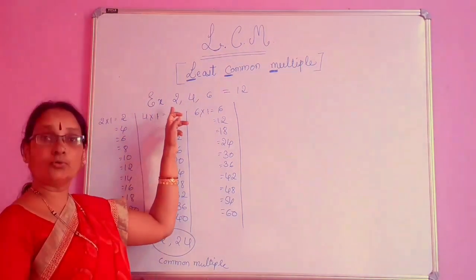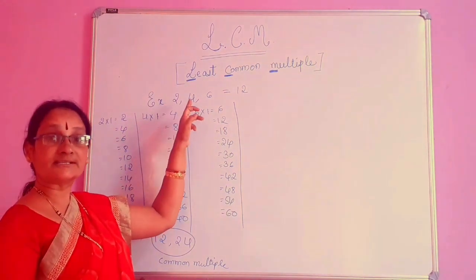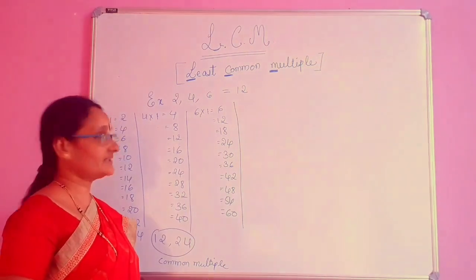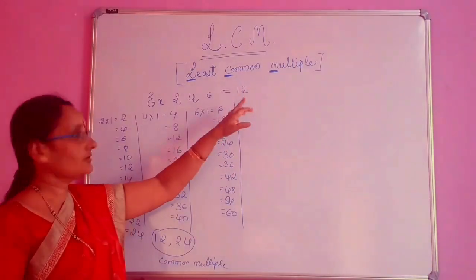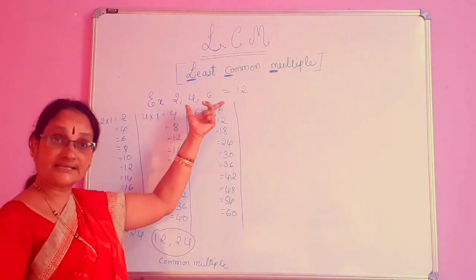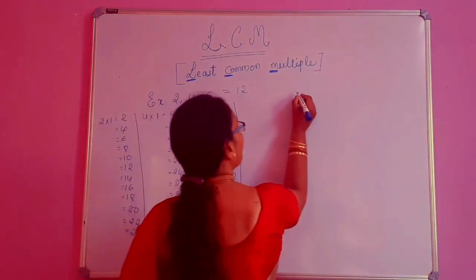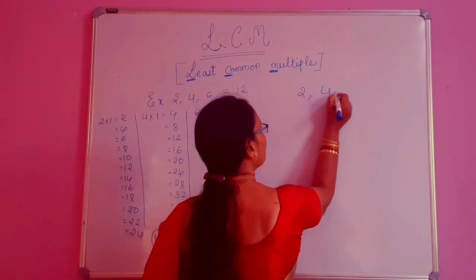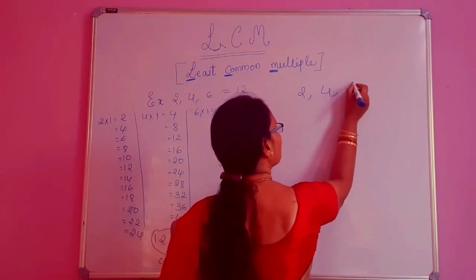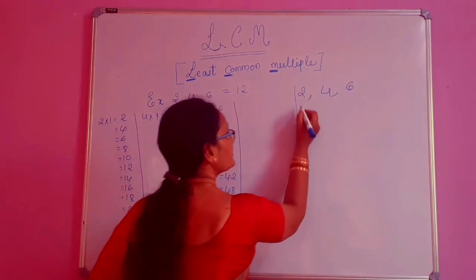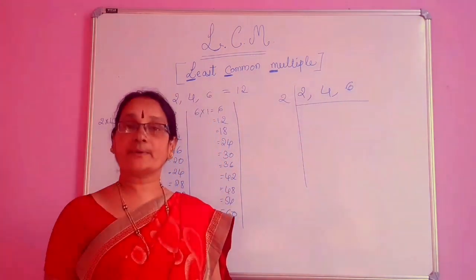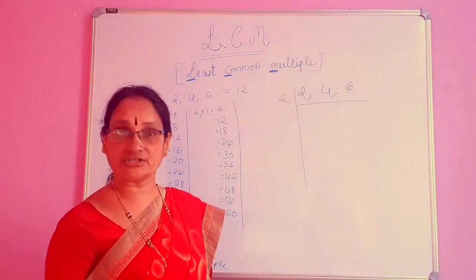12 is the smallest common multiple or least common multiple. So the LCM of 2, 4, 6 by the listing of the multiples method is 12. The same numbers' LCM can be found out by the prime factorization method.